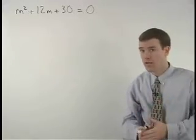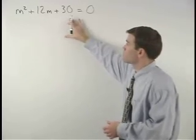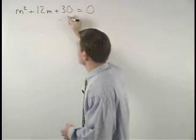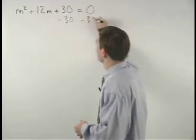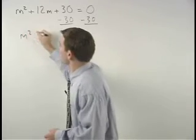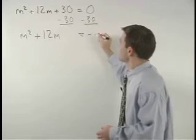In order to create a perfect square trinomial on the left side, we would first move this plus 30 over to the right by subtracting 30 from both sides of the equation, and we have m squared plus 12m equals negative 30.